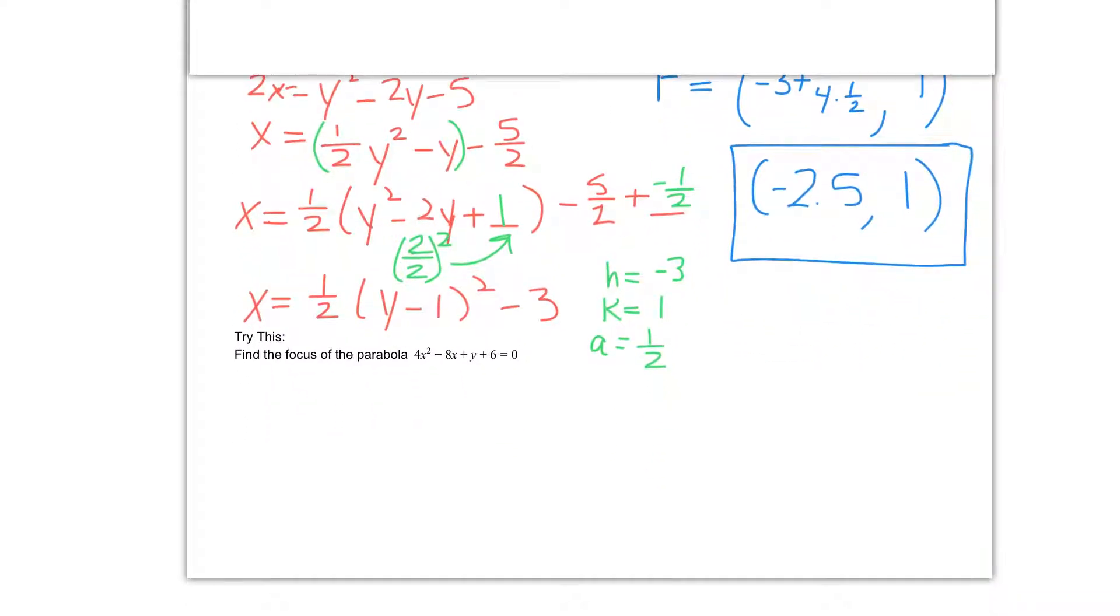Next, I would like you to do the try this, so you can pause it now and unpause it when you want to check your answer. If you did the try this correctly, you should have gotten a focus of 1, comma negative 33 over 16. Or if you wrote it as a decimal, it was 1, comma negative 2.0625. If you have any questions, please let me know.